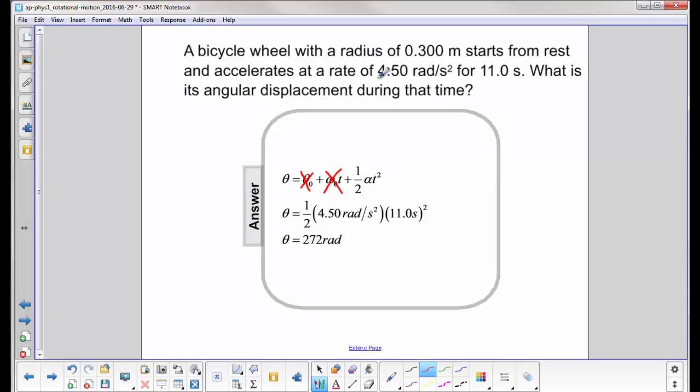Alpha is 4.50 radians per second squared, and your time is 11. Make sure you pay attention to that square. That's one of the most common mistakes on these problems. People forget to square the time. When you do that, you get an answer of 272 radians.